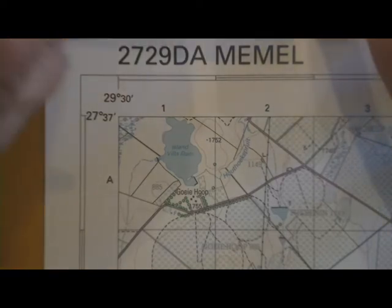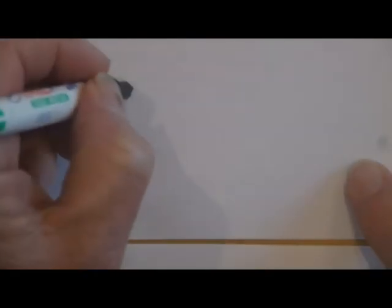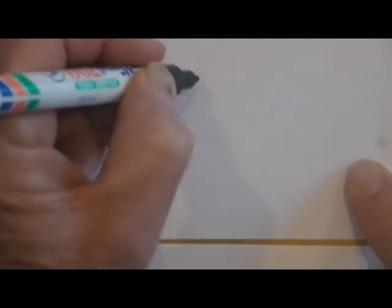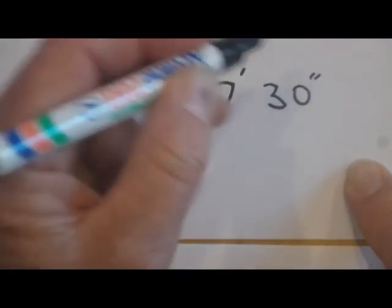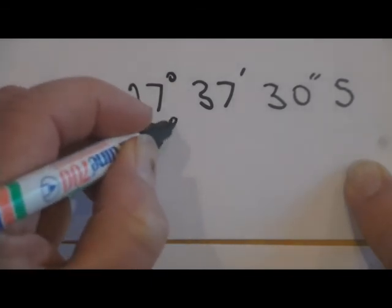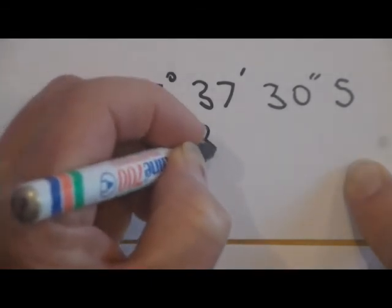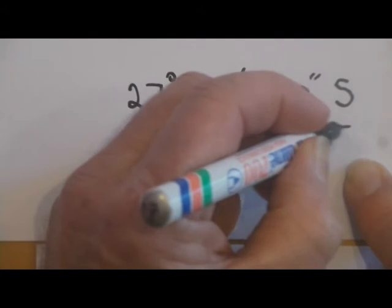Okay, now the important thing is to write those down correctly. So if we write those properly, we've got to make sure that we get all the degrees and minutes in the right place. Okay, so we said 27 degrees, 37 minutes, 30 seconds, and we mustn't forget the south. And 29 degrees, 31 minutes, 48 seconds, east.